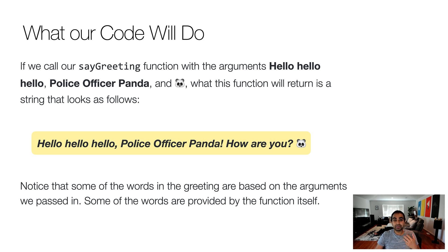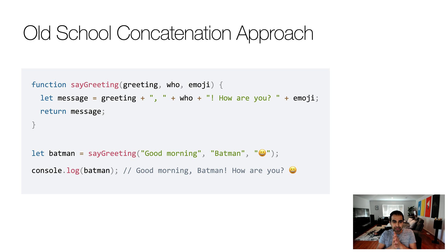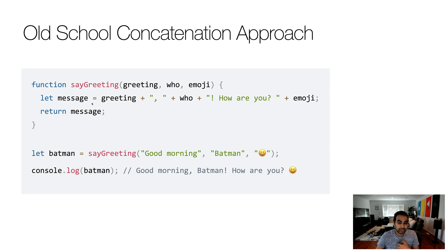Let's look at the more traditional old school approach for how we might build a string like this. This approach is typically known as the concatenation approach, or a bunch of plus and comma characters. Here you can see our sayGreeting function as defined earlier, and we have the message variable. Its value is the argument greeting, then the plus symbol, then a comma and a space in quotation marks, plus the variable for who, then more text — an exclamation mark and various other things that go into generating the final content.